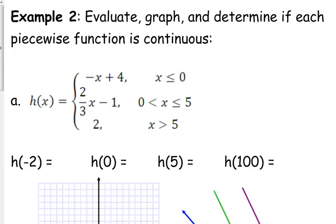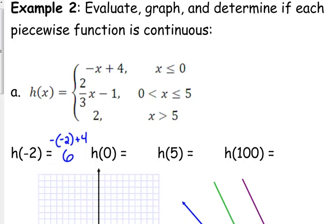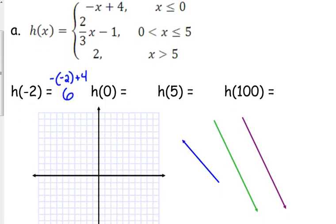Piecewise functions can have 3 pieces — they can actually have as many pieces as needed. Most of the time we deal with 2, but sometimes we have 3. Let's look at this one. H of negative 2: negative 2 is less than 0, so we're going to plug it into the first piece. We've got negative negative 2 plus 4, which is positive 2 plus 4 equals 6. So (negative 2, 6) is a point. Let's go ahead and plot that.